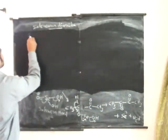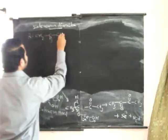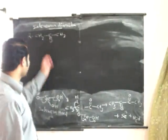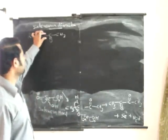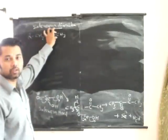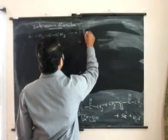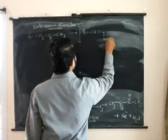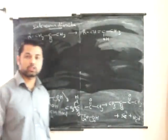The starting material is CH3COCH3. Here two enol forms are possible, but the enol form with the double bond giving the highly substituted alkene is more stable instead of the lesser substituted alkene. So the enol form for this ketone is the most stable enol form.